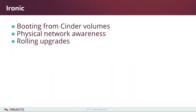In terms of bare metal provisioning, Ironic has a few interesting developments in Pike. First, you can now boot from a Cinder volume just like you can with a VM. Also, Ironic can now recognize physical networks rather than just virtual ones — there's a good deal of configuration to take into account, so make sure you check into that. Also, rolling upgrades are now supported with Ironic, though there's a very specific procedure so you'll want to check that out carefully before getting started.